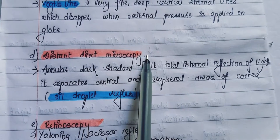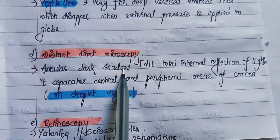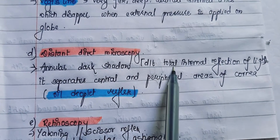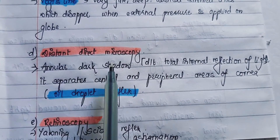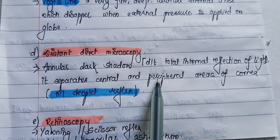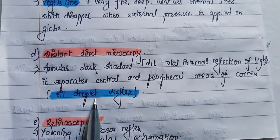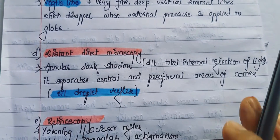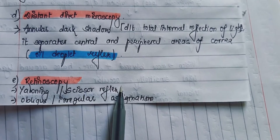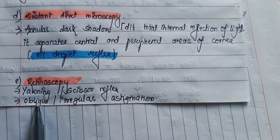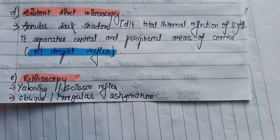In distant direct ophthalmoscopy, annular dark shadows are seen due to total internal reflection of light. This dark shadow separates the central and peripheral areas of the cornea, known as the oil droplet reflex. In retinoscopy, a scissor reflex is seen and oblique or irregular astigmatism is also obtained.